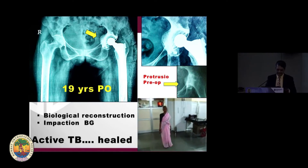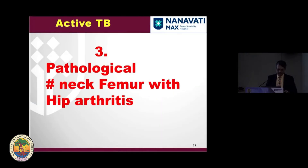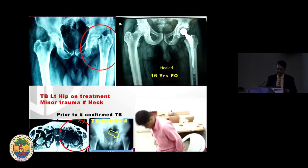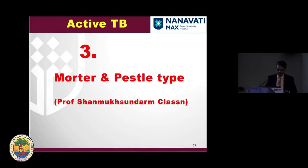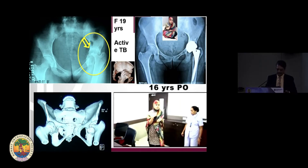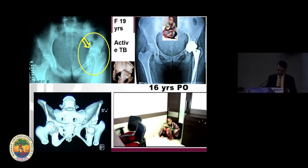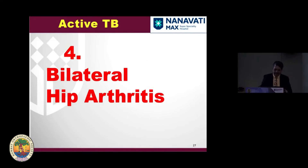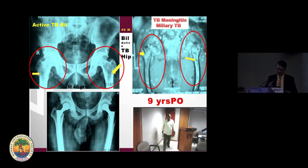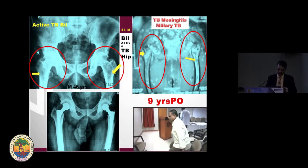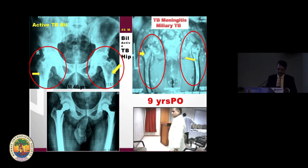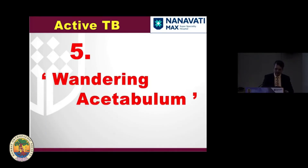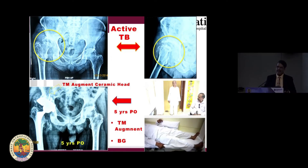Another patient is now more than 19 years follow-up. Then a pathological fracture case: a patient had TB hip arthritis, suffered a minor trivial fall, and developed a fracture neck of femur with arthritis. MRI proved active TB — mortar and pestle type. She came from Lucknow with classical findings and responded very well to anti-TB medication. A very rare case of bilateral hip arthritis in TB — proven bilateral involvement with wandering acetabulum and complete destruction of the superior part, which was active and responded very well to anti-TB medication.